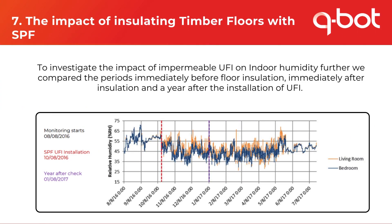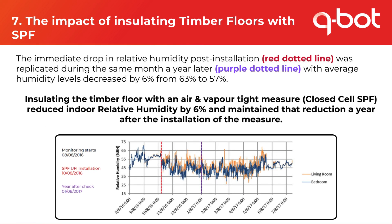Comparing the periods immediately before insulation, after insulation, and a year after installation — the immediate drop in relative humidity post-installation is noted with a red dotted line. A year later, the purple dotted line shows average humidity levels decreased by 6%, from 63% to 57%. Insulating the timber floor with an air and vapour tight measure such as closed cell spray foam reduced indoor relative humidity by 6% and maintained that reduction a year after installation.